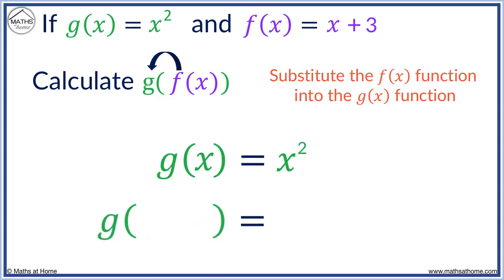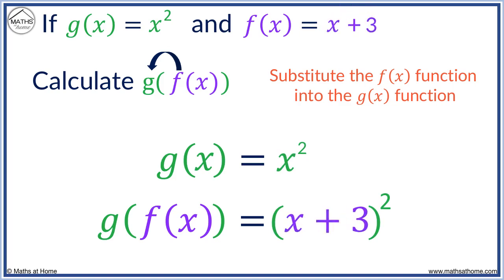To find g of f of x, we substitute x with f of x. The g of x function is squaring x, so we will be squaring also. But instead of x squared, we have x plus 3 squared. We replaced the x with x plus 3. Notice that we need brackets around x plus 3, because we are squaring the whole thing.